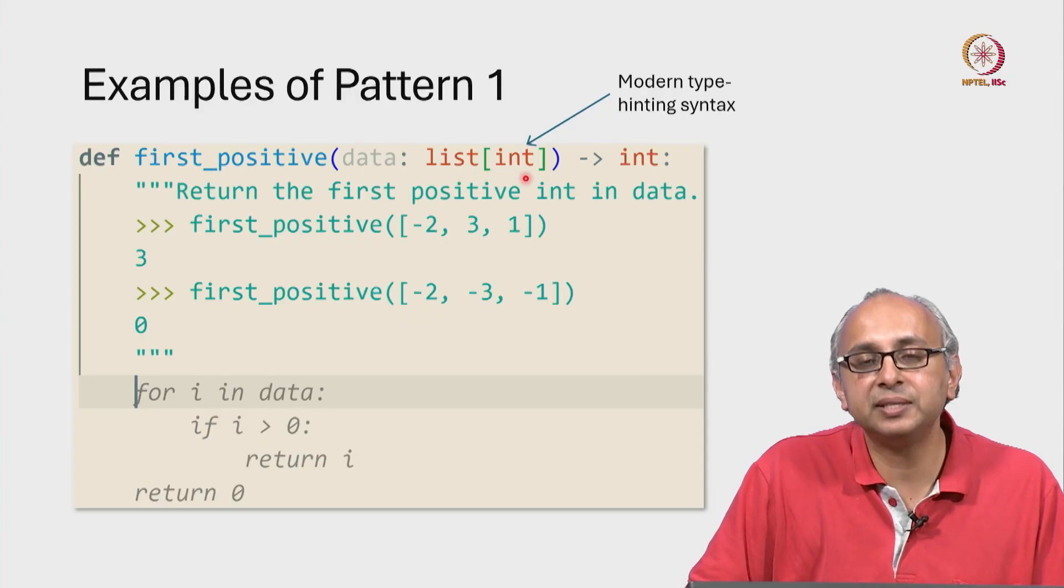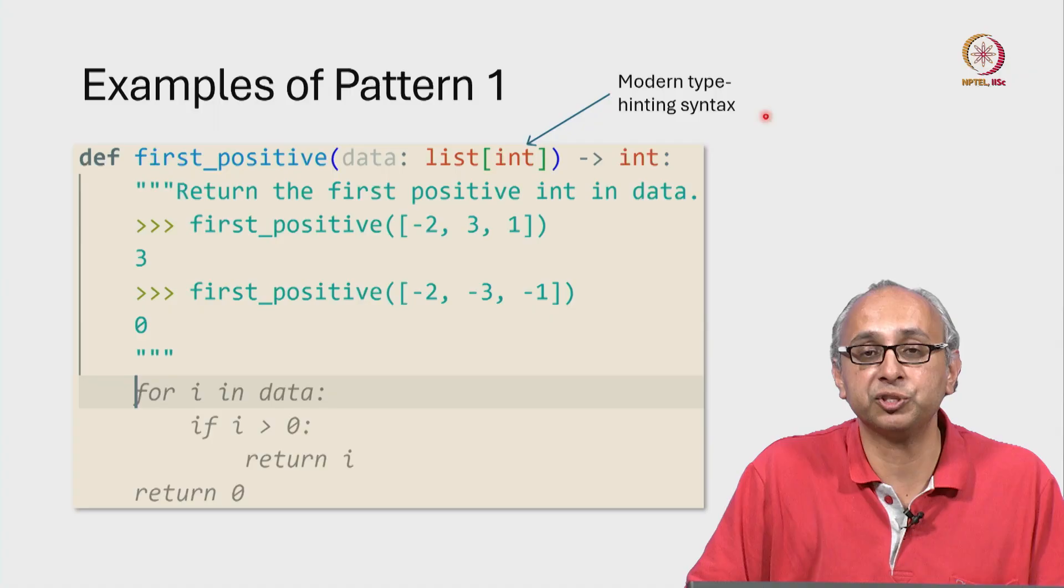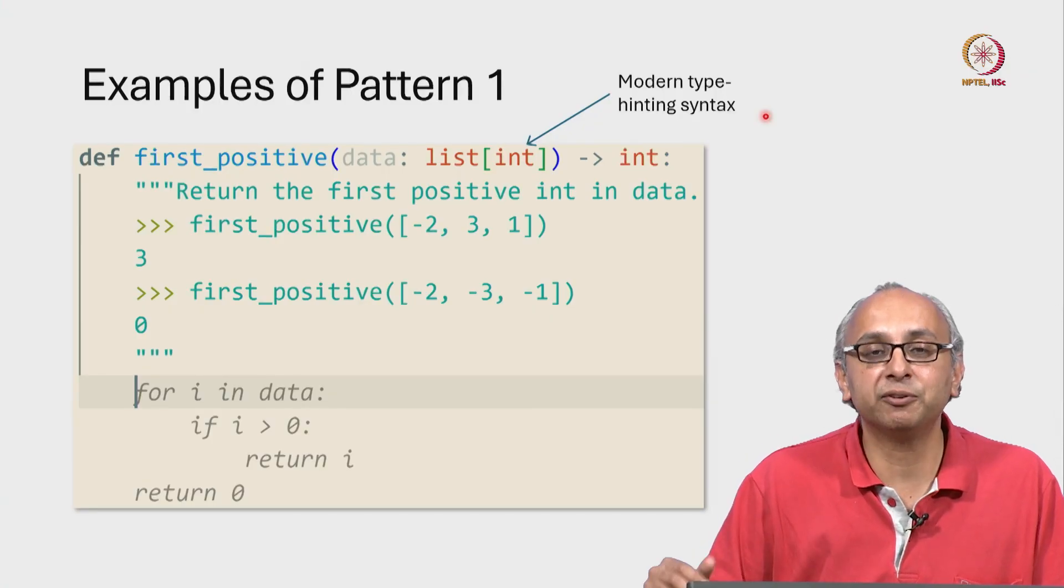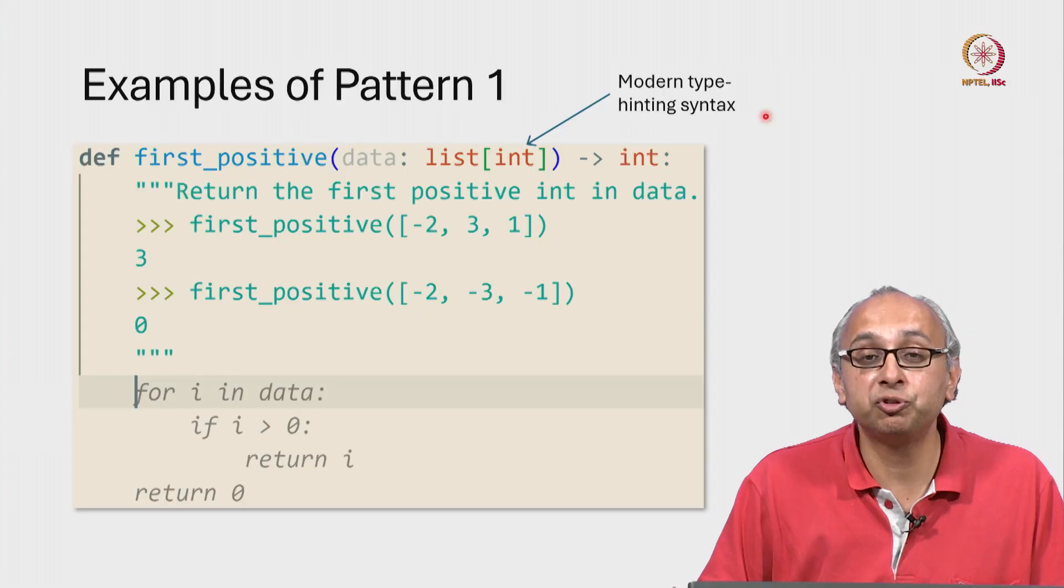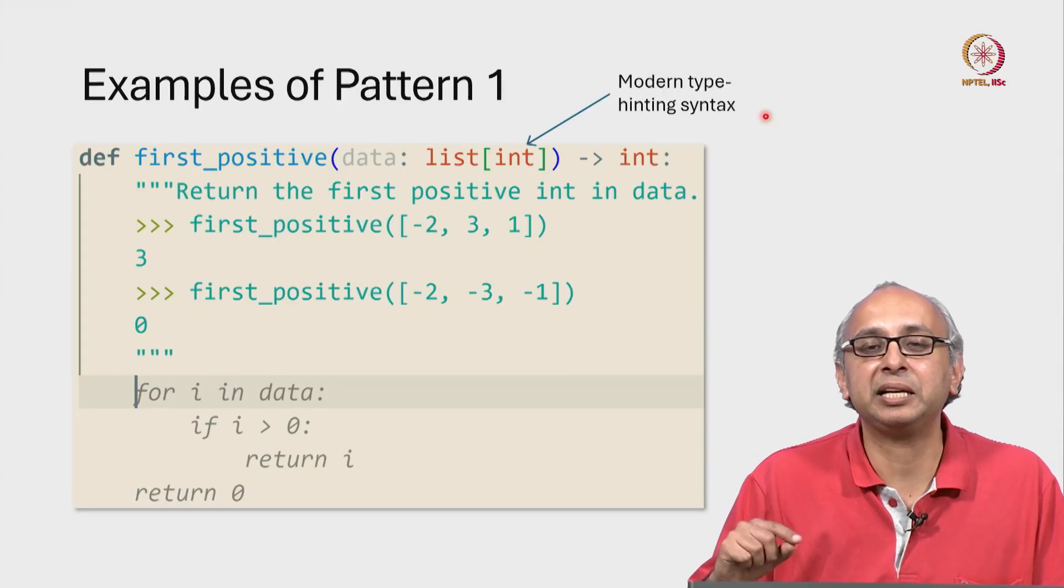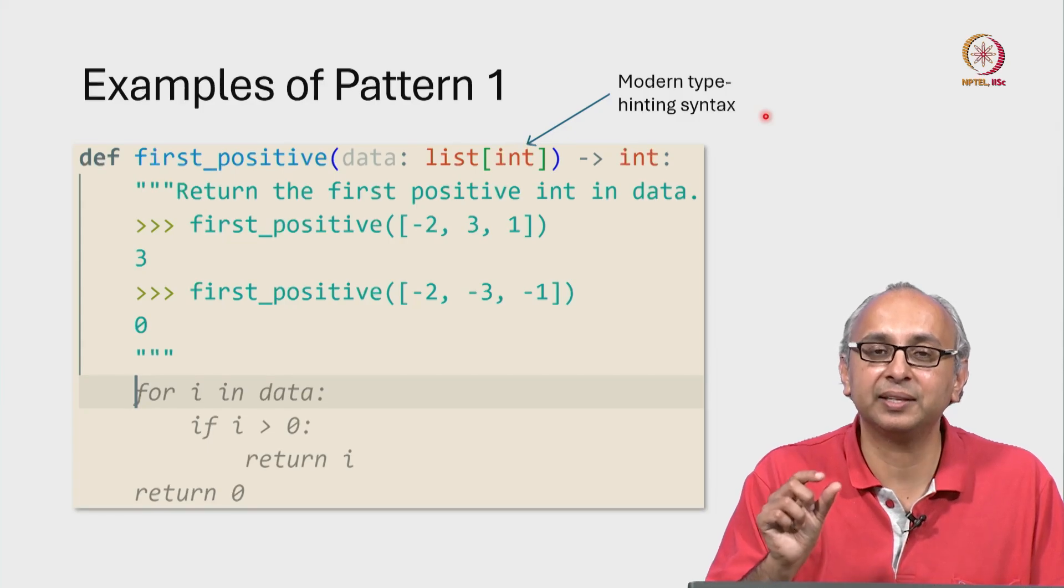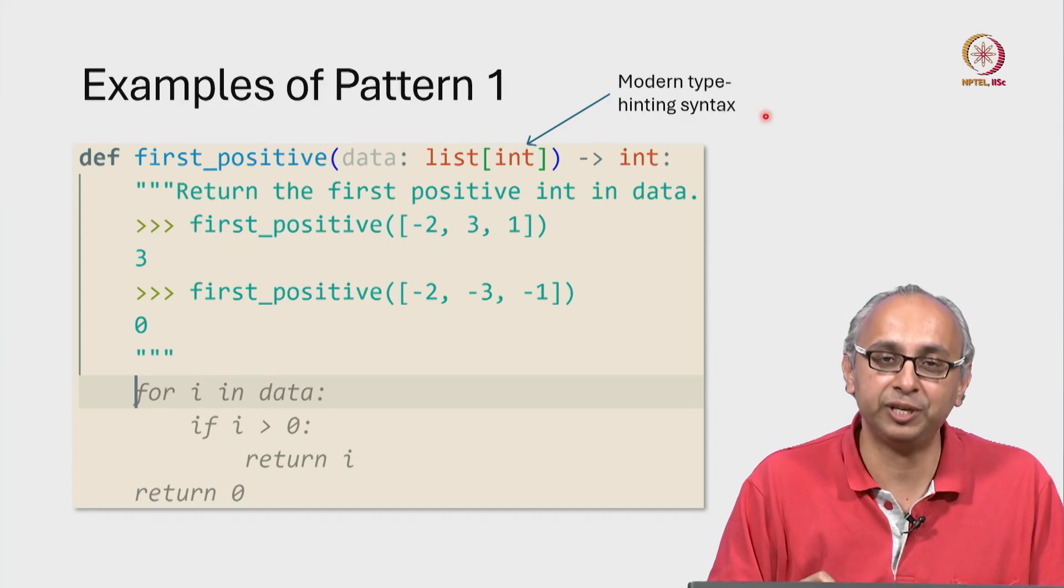By the way, this syntax is the syntax that's now used in the current versions of python. In older versions of python, including the version of python that the code check website currently supports, we will see a slightly older syntax for indicating that it is a homogenous list of integers.